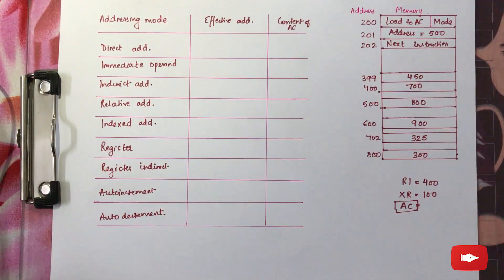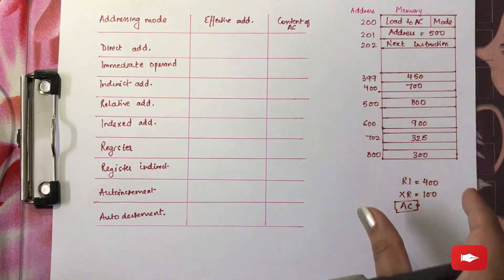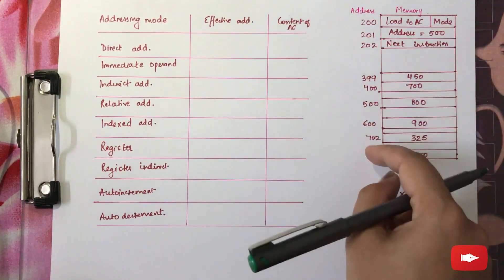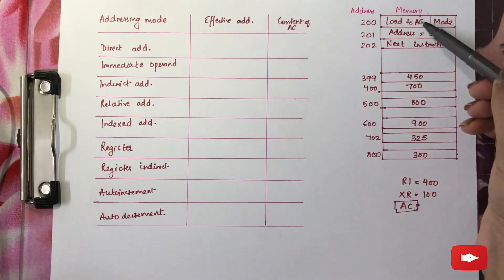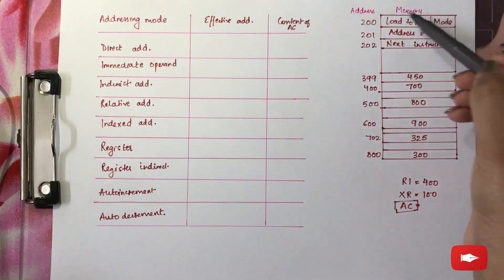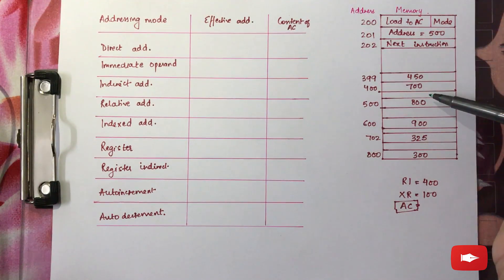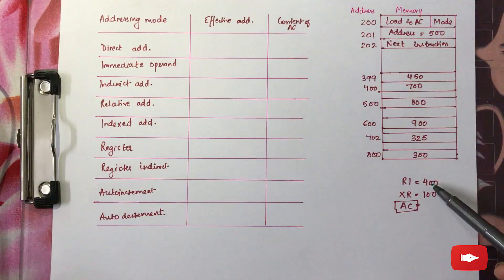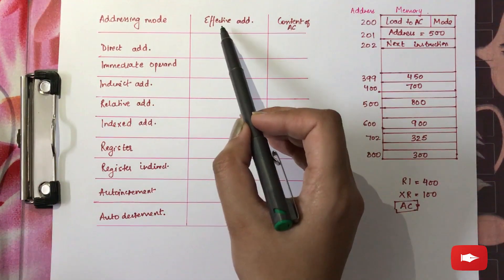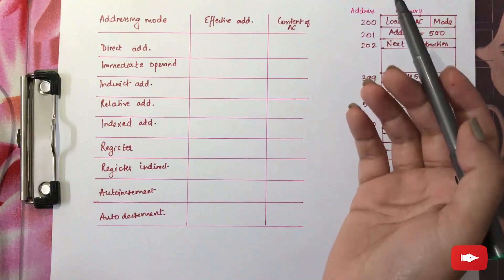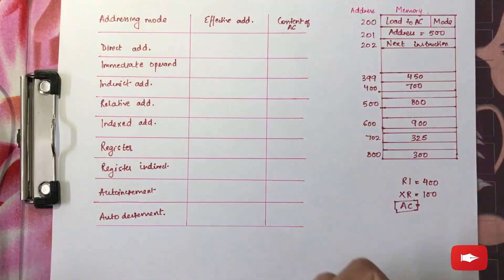This video specifies the example for addressing modes that we have already studied in the previous video. According to this sheet, this is the part of the memory giving all the addresses and the values at those addresses. The first row tells you the operation and the mode, the second tells you the address — this is the instruction part — and others are the address and certain values at that particular address. The value of the register is 400, the index register (XR) is 100. We are going to calculate the effective address and the content of the accumulator, which is basically the operand for different addressing modes.